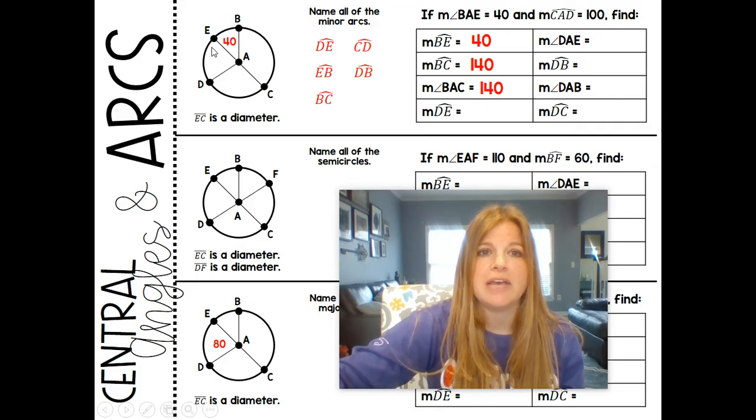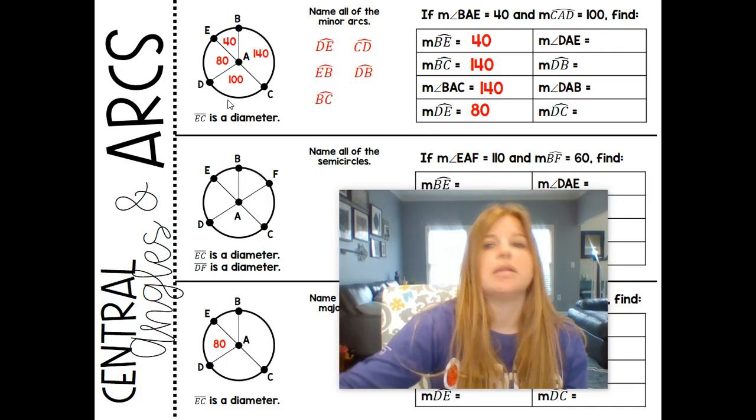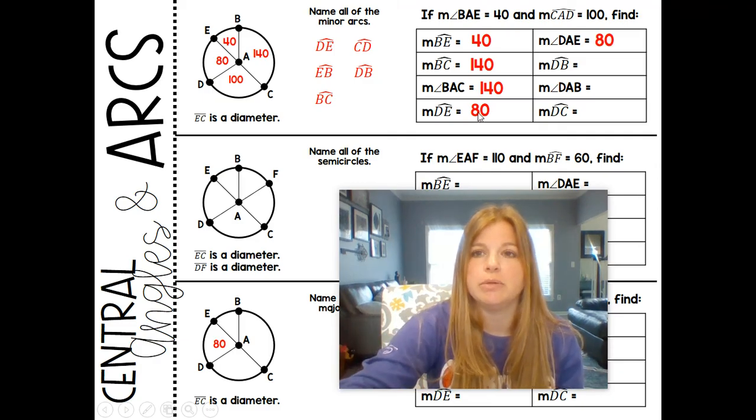Now, DE. If I wanted to look at DE, well, let's see. If we know that this is 40 and this is 140, and we know that the measure of angle CAD is 100, if this is 100, then DE has to be 180 minus that 100, so DE is 80. The measure of angle DAE would be the same as the measure of arc DE, which is 80.